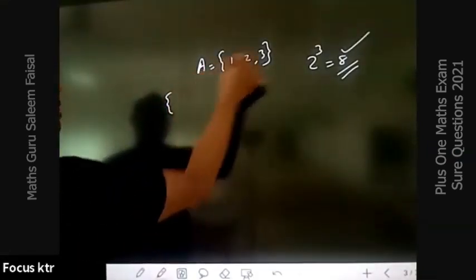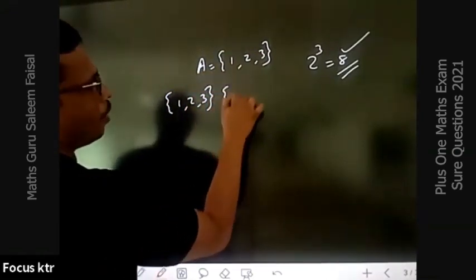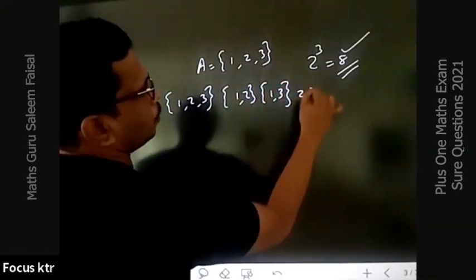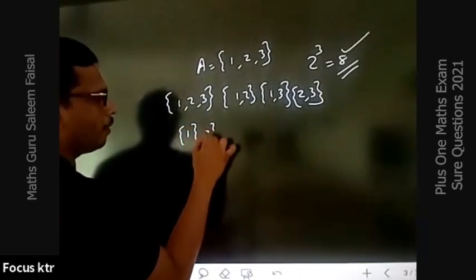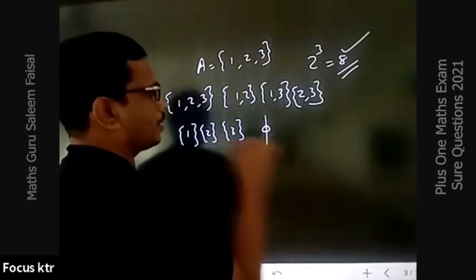What are the subsets of {1, 2, 3}? {1, 2, 3}, {1, 2}, {1, 3}, {2, 3}, {1}, {2}, {3}, and the empty set. These are the subsets.